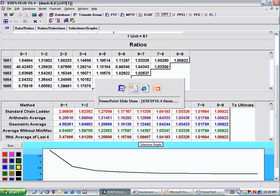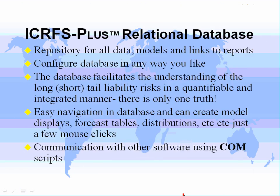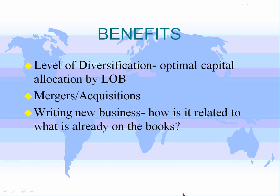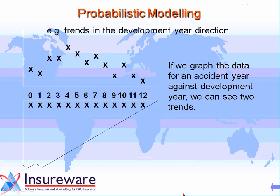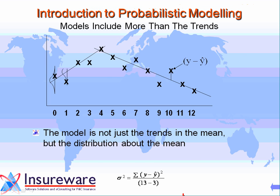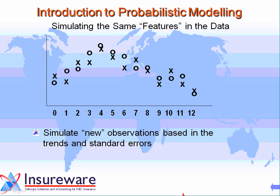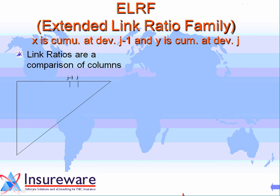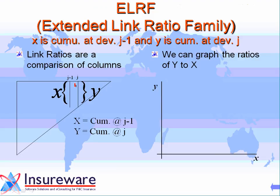What is it that you actually do when you calculate a ratio? Let's study this in more detail and do it graphically. Suppose you've got a cumulative array of any sort of numbers. The extended link ratio family only applies to cumulative arrays, whereas the link ratio techniques module applies to both an incremental array and a cumulative array.